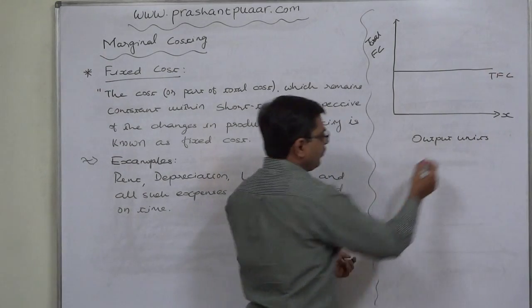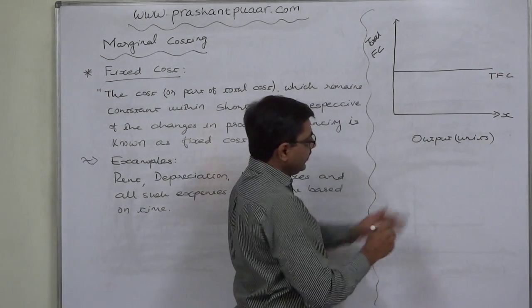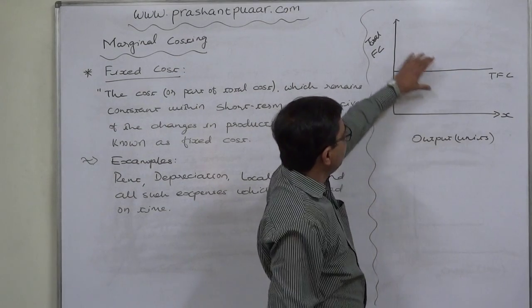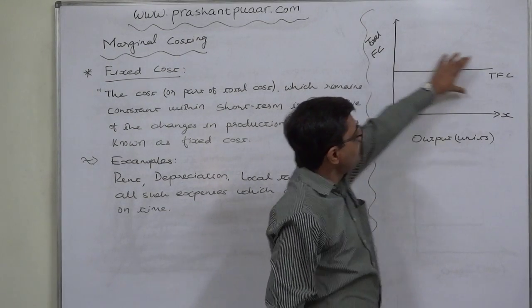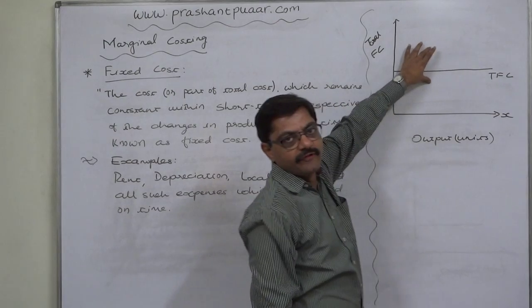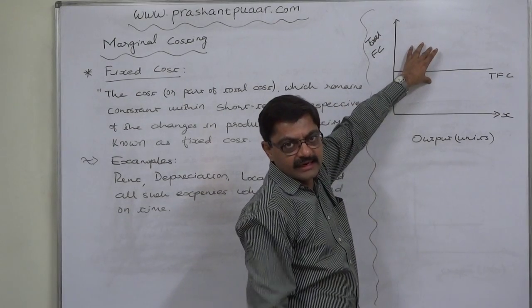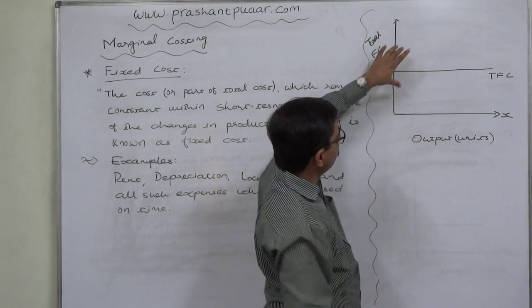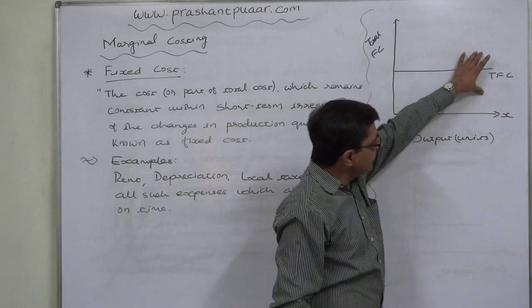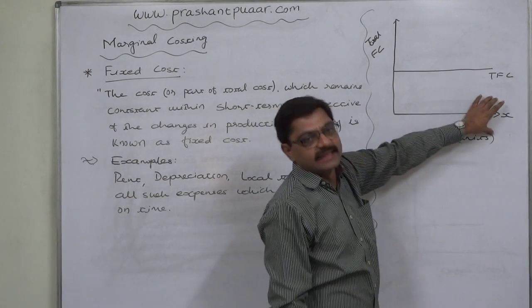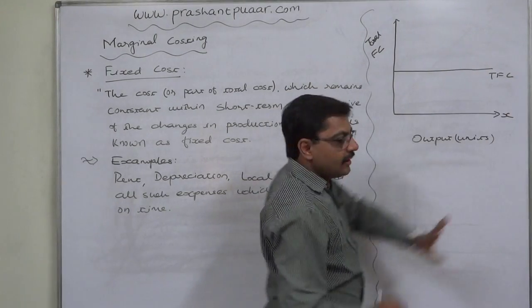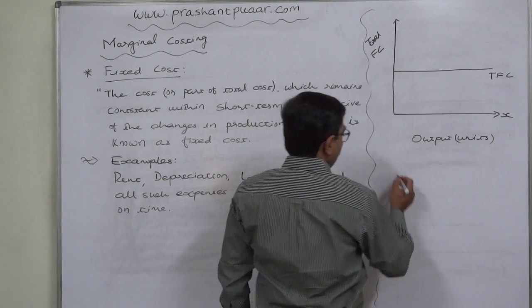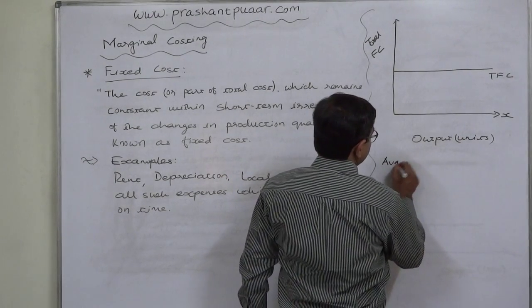Irrespective of increase or decrease in production quantity, there will be no change in the total amount of fixed cost — it remains constant. So the total fixed cost line is parallel to the X-axis. Now, what happens to the average amount of fixed cost?